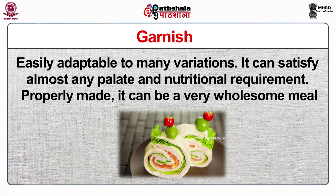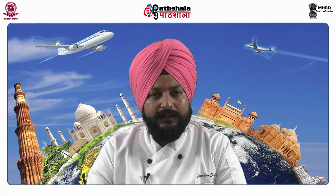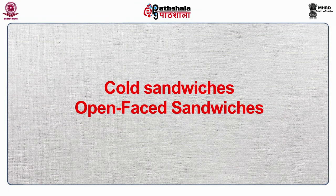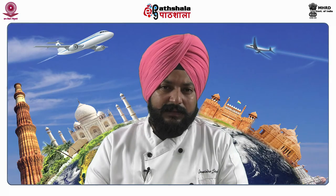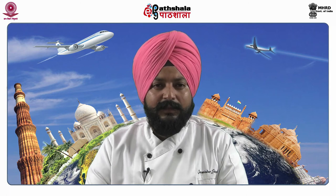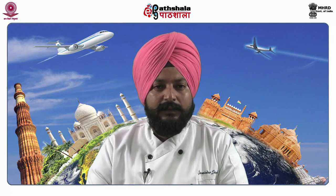Now we discuss the types of sandwiches. There are two types: cold sandwiches and hot sandwiches. Cold sandwiches include open face sandwiches, where one kind of bread is used with filling placed on top in variable shapes — butter can be used as a spread with cheese or meat as filling, and garnish is added last. Regular cold sandwiches use two slices of toasted bread with butter; mayonnaise or sandwich spread can be used as a lining to prevent the bread from absorbing moisture.